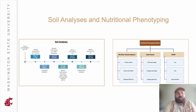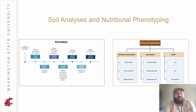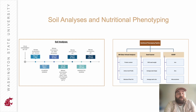Throughout the growing season we collected soil samples at five different time points to measure things like nitrate, ammonium, and pH, as well as several important soil health indicators such as permanganate oxidizable carbon and mineralizable carbon. After harvest, we sent our seeds through our nutritional phenotyping platform to measure the protein content and amino acid profile of the seeds, as well as important micronutrients such as iron and zinc.